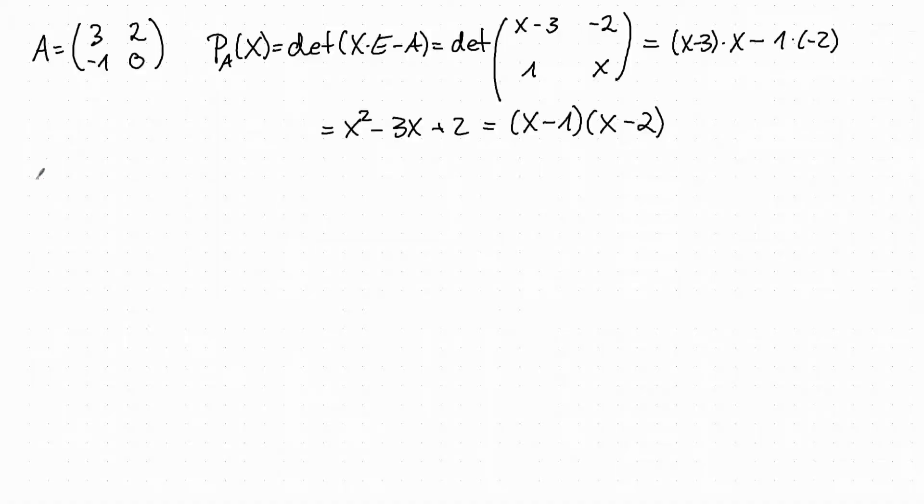Next step is to calculate the eigenvectors. We start with the first eigenvalue lambda equal to 1. We have the following condition. A times v has to be equal to lambda, which is 1, times v.